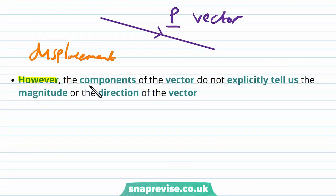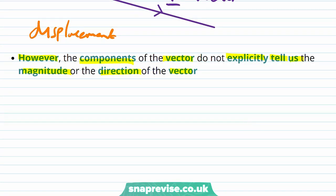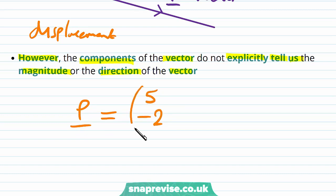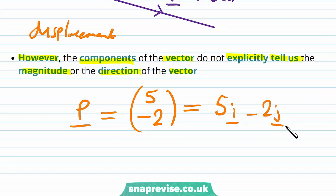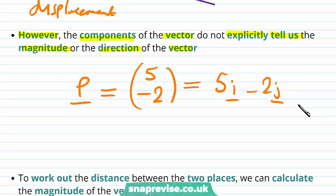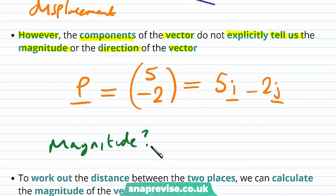However, the components of the vector do not explicitly tell us the magnitude or direction of the vector. Let's say we have p in the column vector form 5, −2, or even in component form 5i − 2j. From this, we cannot immediately see what the magnitude or size of the vector is, or the direction of the vector.